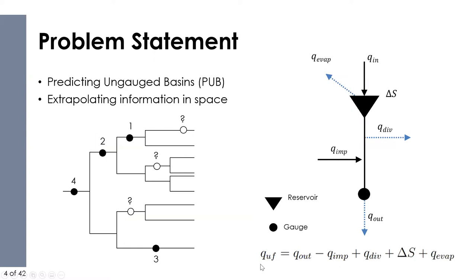Unimpaired flows and natural flows are different terms. Unimpaired flow is the flow produced by a basin without human-created water storage, diversions, or return flows — basically, if we just take the humans out of the watershed, how much flow will we have? You take the flow coming out of the gauge, take out all the water you've imported, bring back in all the water that was diverted or lost to evaporation, and account for change in storage. That's the response variable we're trying to predict.